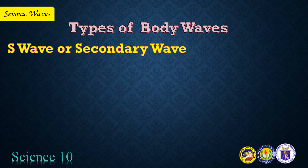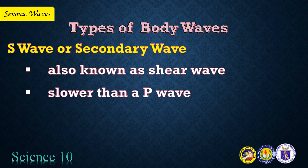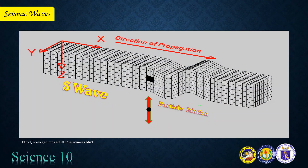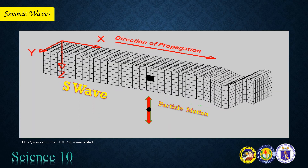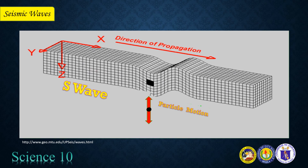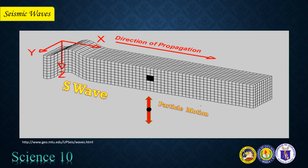S wave, or secondary wave, is also known as shear wave. It is slower than a P wave. It can only move through solid rock and not through any liquid medium. It is this property of S waves that led seismologists to conclude that the Earth's outer core is a liquid. Here is an S wave in motion. S waves move rock particles up and down or side to side, perpendicular to the direction that the wave is traveling in, or the direction of wave propagation.